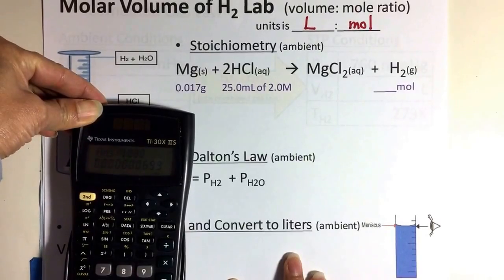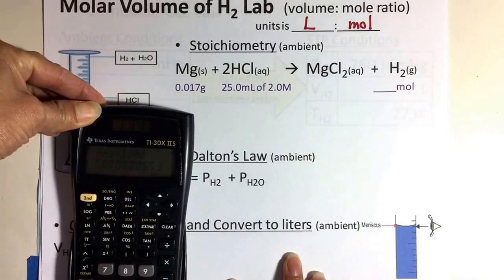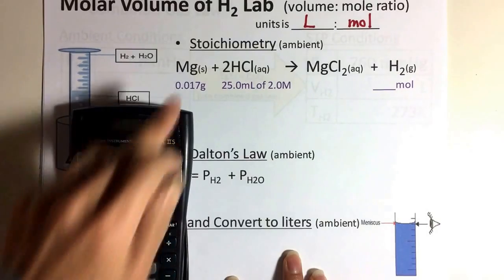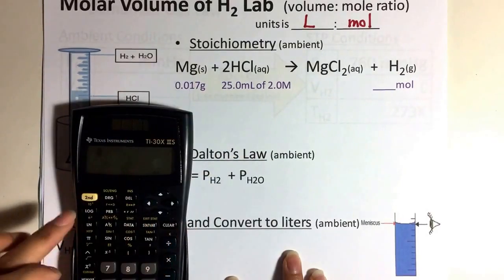which is 0.00098 millimoles, that tells you that magnesium is definitely the limiting reactant.